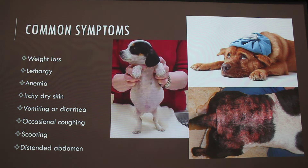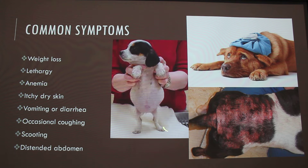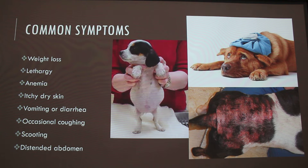With worms, you'll usually notice weight loss with the intestinal ones. Dogs can be lethargic or anemic if they have ticks or fleas, because those actually drink your dog's blood. They'll have dry, itchy skin — this is an extreme example of flea dermatitis, a dog that's had fleas for a very long time. Other symptoms include vomiting, diarrhea, occasional coughing, and scooting on the carpet if they have worms, because it makes their butt itchy. If your dog doesn't normally do that, it could be a sign you need to have them tested.